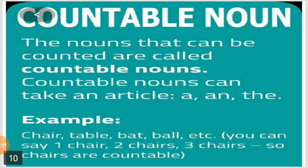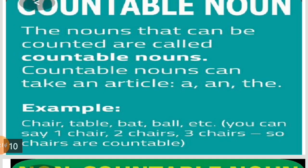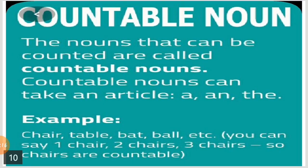All these articles are used for countable nouns. For example: chair, table, bat, ball, etc. All these come under countable nouns. So you can say one chair, two chairs, three chairs. Chairs are countable.